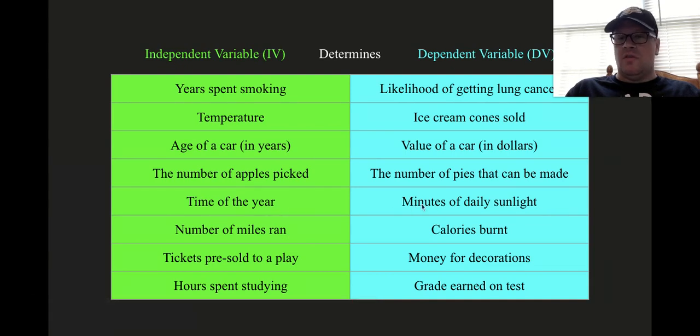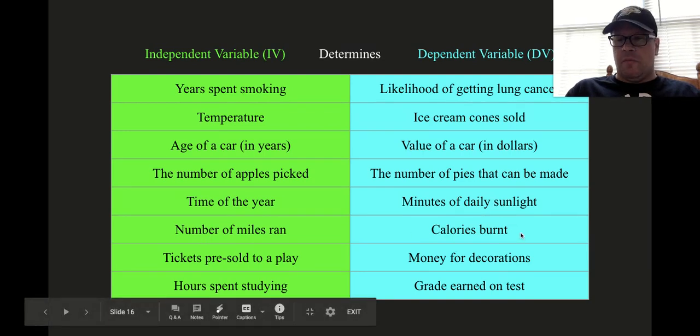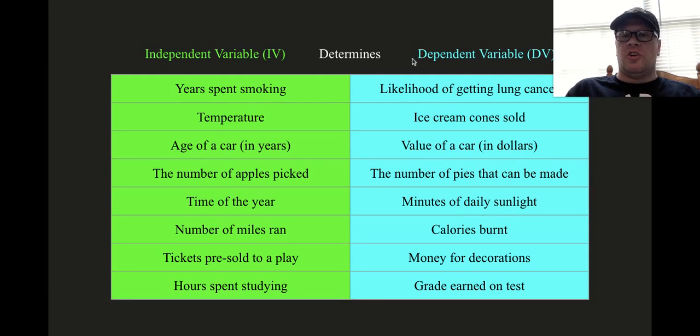the time of the year, having an impact on the minutes of daily sunlight, number of miles you run, having an impact on the calories you burn, tickets that are sold to a play, impacting the money for the decorations, hours spent studying, having an impact on the grade earned on a test. So again, an independent variable, if it has been proven to do so, will determine, at some level, the dependent variable.